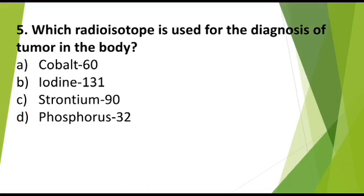MCQ number 5: Which radioisotope is used for the diagnosis of tumor in the body? A: Cobalt-60, Option B: Iodine-131, Option C: Strontium-90, Option D: Phosphorus-32. Correct answer is Iodine-131.